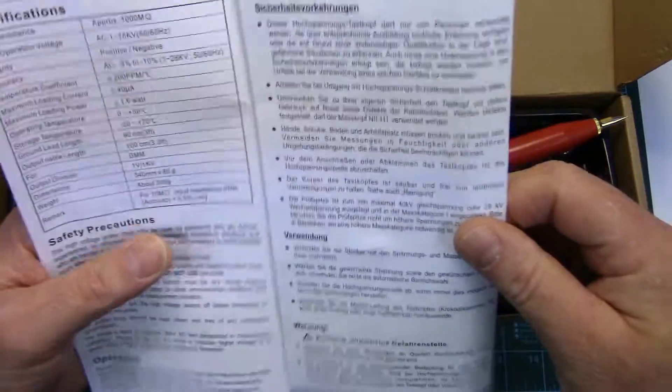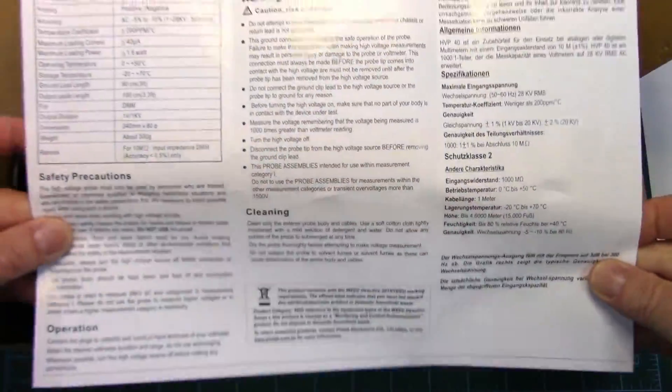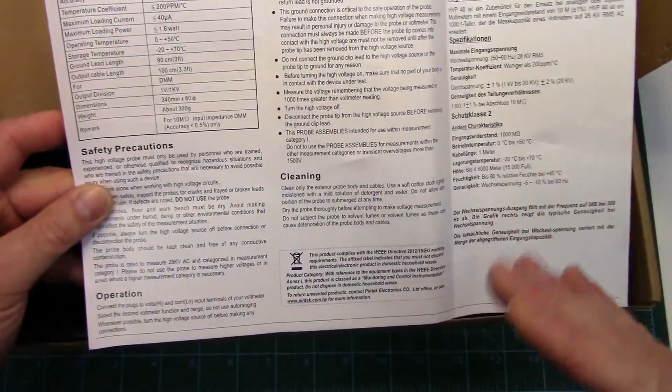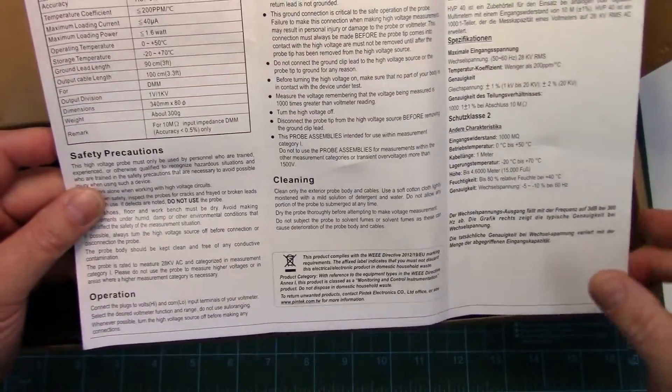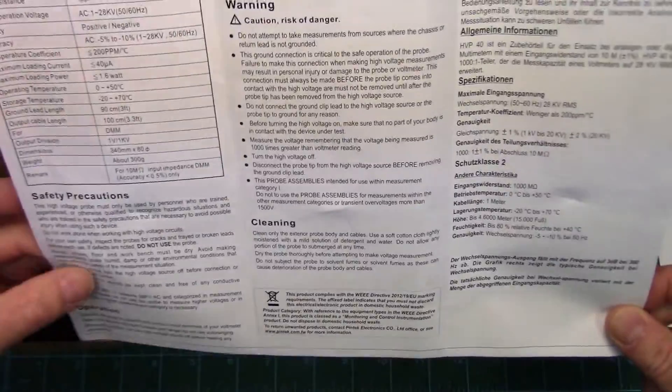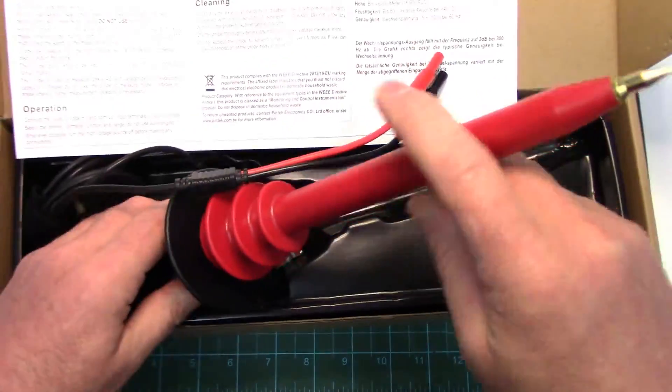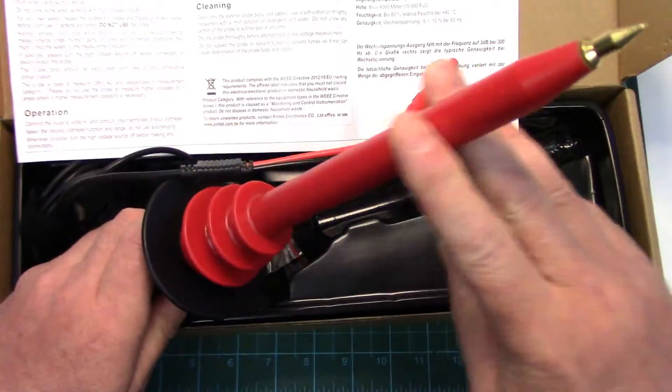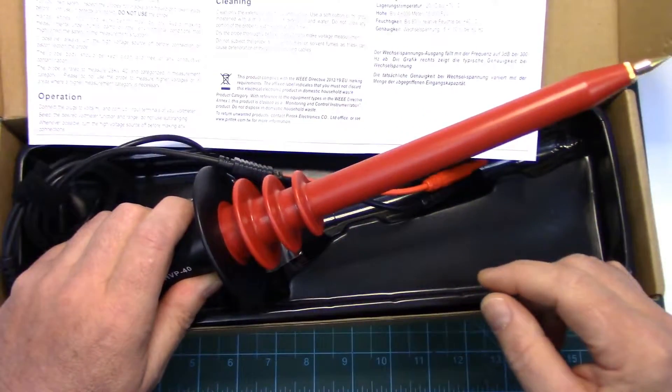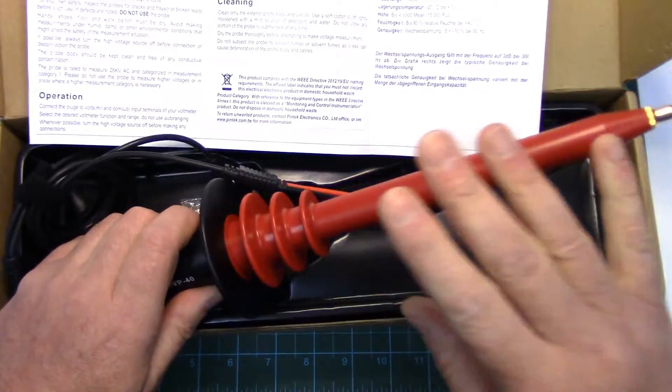Go over the instructions real quick. Now if you have to read instructions when using a high voltage probe, maybe you're not quite ready to use one, but hey, it wouldn't hurt checking over the instructions. Safety precautions operation talks about cleaning. That's another thing. When you're checking high voltage, this has to be absolutely dry. High voltage will arc past the water even with the creepage discs there.